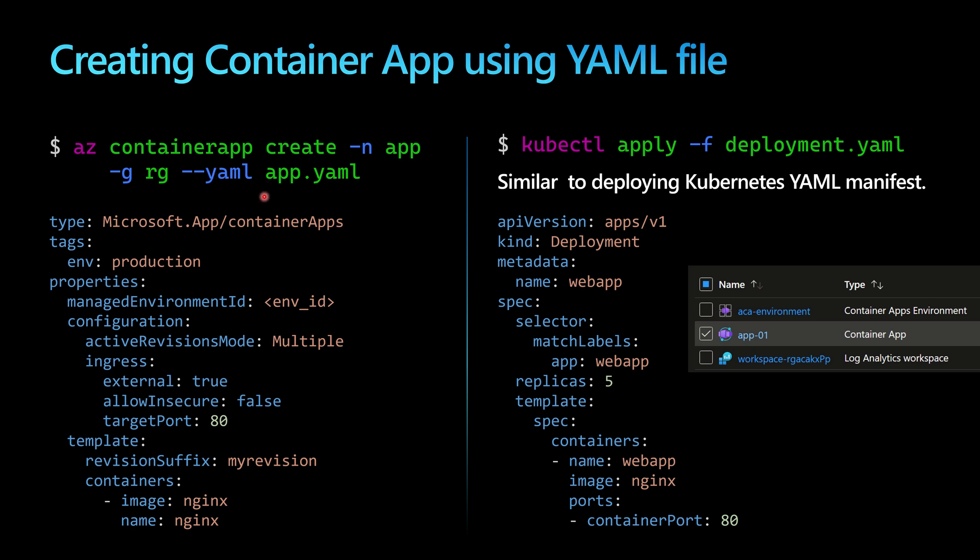This is especially useful for teams collaborating to create container apps. For example, each time a developer team wants to create or change the configuration of a container app, because the file is saved into a Git repository, they will collaborate through pull requests and approve those changes.